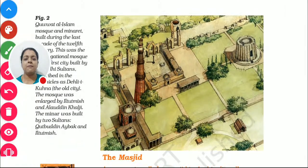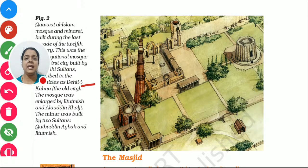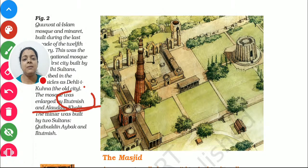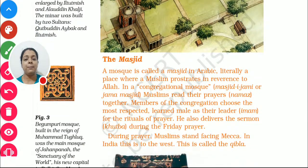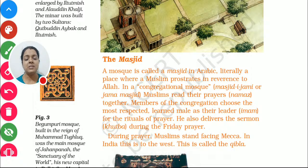Looking at figure 2, we find a site in Delhi — an old city — where construction was carried out by both Alauddin Iltutmish and Alauddin Khalji. The minar was built by two sultans: Qutbuddin Aibak and Iltutmish. This is the Qutub Minar. Now regarding the masjid — mosque is the English word; masjid is the Arabic term — it literally means a place where a Muslim prostrates in reverence to Allah.